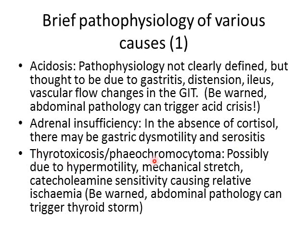With thyrotoxicosis or pheochromocytoma — too much thyroid hormone or too much catecholamines — you can also develop abdominal pain, sometimes as the main presenting symptom. This is possibly due to hypermotility as the stomach is overstimulated by these hormones, causing stretching and pain. The excess catecholamines, and sensitivity to catecholamines due to thyroid hormone, can cause blood vessels at the gut wall to contract and cause ischemia. Conversely, abdominal pathology can trigger a thyroid storm, so always consider which came first.